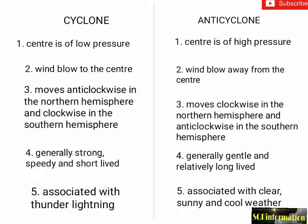Differences between cyclone and anti-cyclone: In a cyclone, the center is of low pressure, but in an anti-cyclone, the center is of high pressure. In a cyclone, wind blows toward the center, but in an anti-cyclone, wind blows away from the center. In a cyclone, movement is anti-clockwise in the northern hemisphere and clockwise in the southern hemisphere, but in an anti-cyclone it is clockwise in the northern hemisphere and anti-clockwise in the southern hemisphere. Cyclones are generally strong, speedy, and short-lived, and associated with thunder and lightning, while anti-cyclones are gentle, relatively long-lived, and associated with clear, sunny, and cool weather.